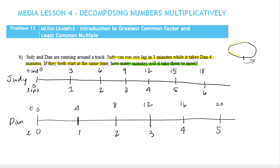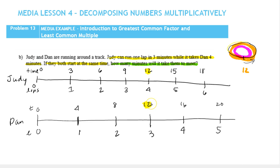They're going to meet when they finish a lap at the same time. Looking at the times, three and four don't match, six and eight don't match, nine has no match, but they both complete a lap after 12 minutes. After 12 minutes, Judy has run four laps and Dan has run three laps — and this is where they match up. The times we're looking for are multiples of three and four.